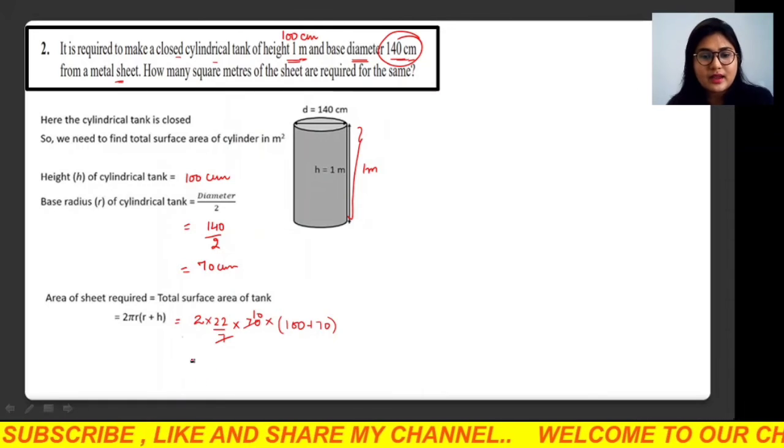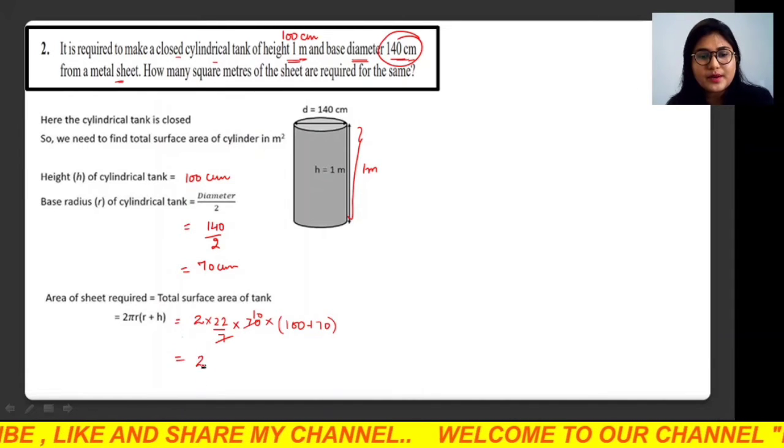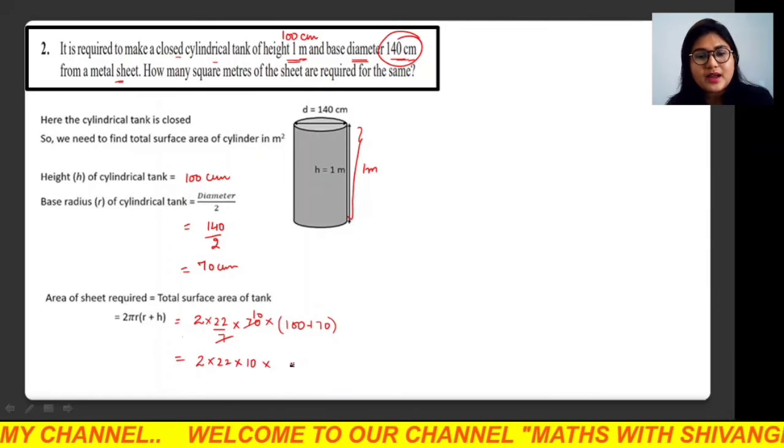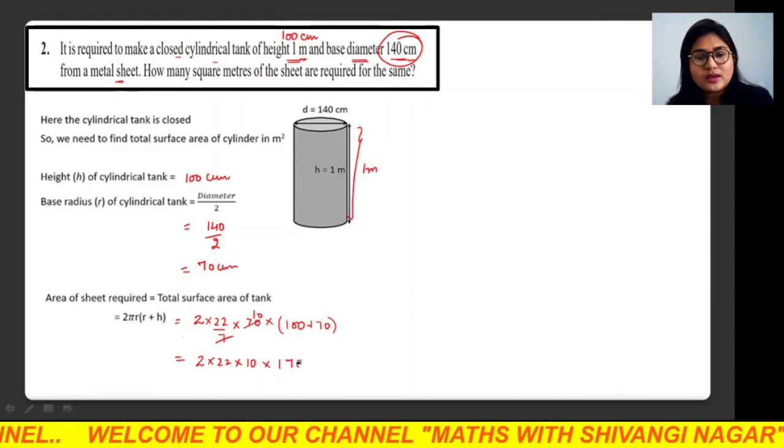When you cancel 10 times, now further solve. So what will you be getting here? 2 × 22 × 10 × (100+70), which is 170.